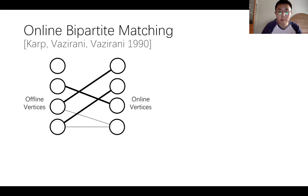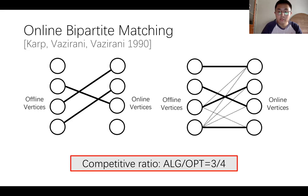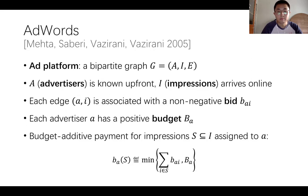At last, the fourth one has no longer available neighbor, so it is left unmatched. The benchmark is defined as the maximum matching size of the instance where all vertices are offline, so the competitive ratio in this instance is 3 over 4.